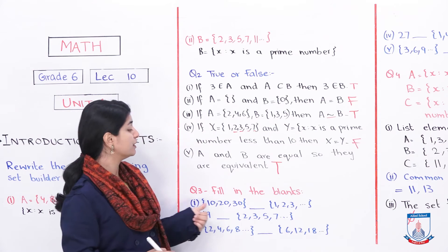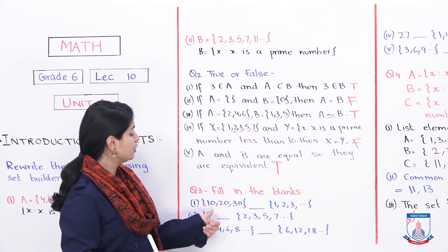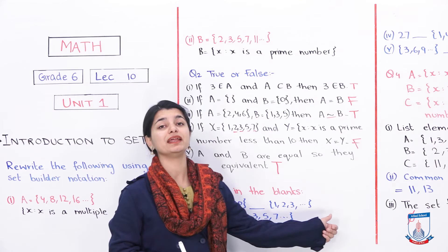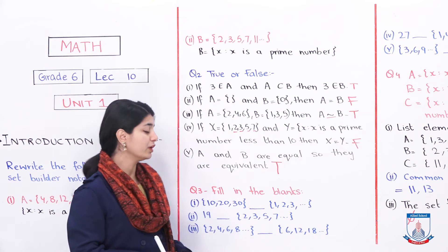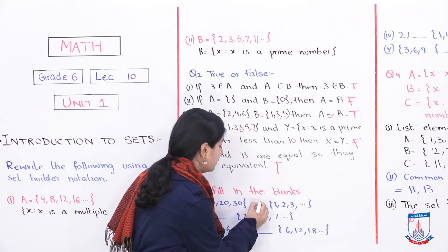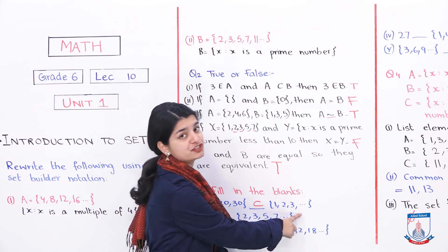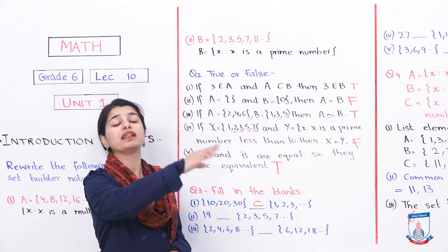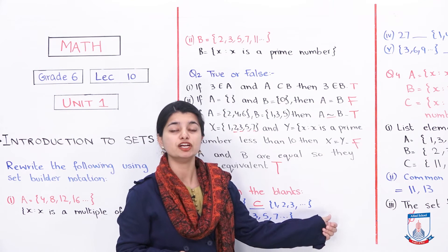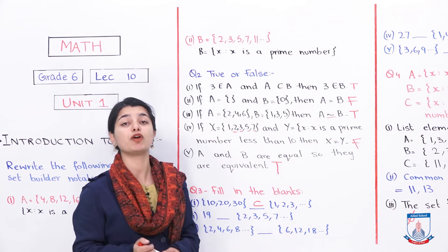Now we move to question number 3, which is fill in the blank. The first blank: {10, 20, 30} is a blank of {1, 2, 3, ...}. The set {1, 2, 3, ...} is the set of all natural numbers. Since 10, 20, 30 are all natural numbers and the second set contains all natural numbers, the answer is that {10, 20, 30} is a proper subset of the set of natural numbers.